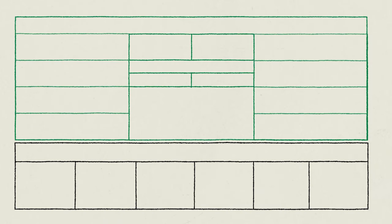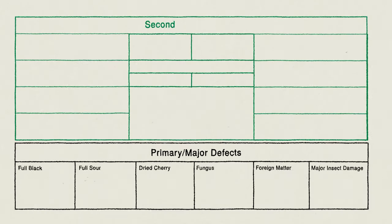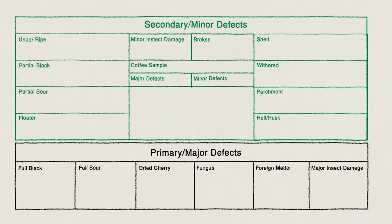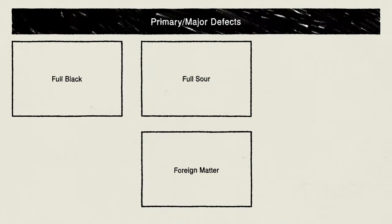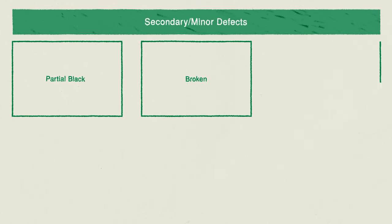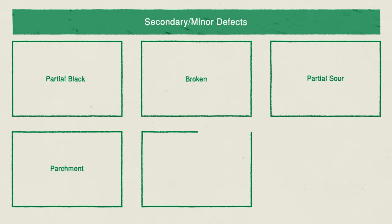There are two categories when we look at physical defects: Category 1, or major defects, and Category 2, or minor defects. Major defect examples include foreign matter, full black, full sour, dried cherry and fungus damage. Minor defect examples include partial black beans, broken beans, partial sour, parchment or pergamino, and immature beans. We have left some links in the description box below in case you would like more information regarding coffee defects.